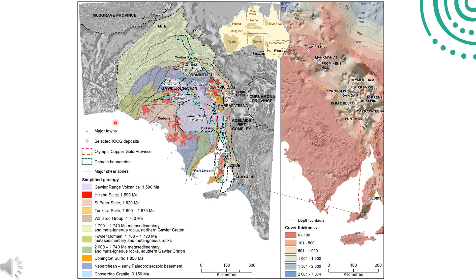The figure to the left shows the Gawler Craton within South Australia with basement geology overlaying greyscale first vertical derivative of reduced to pole TMI. The Olympic copper-gold province covers the eastern side of the Gawler Craton and hosts more than 100 copper-gold occurrences, deposits and mines, including the supergiant Olympic Dam, the fourth largest copper deposit in the world and the largest uranium deposit in the world. Other significant deposits and mines are labelled on the map.